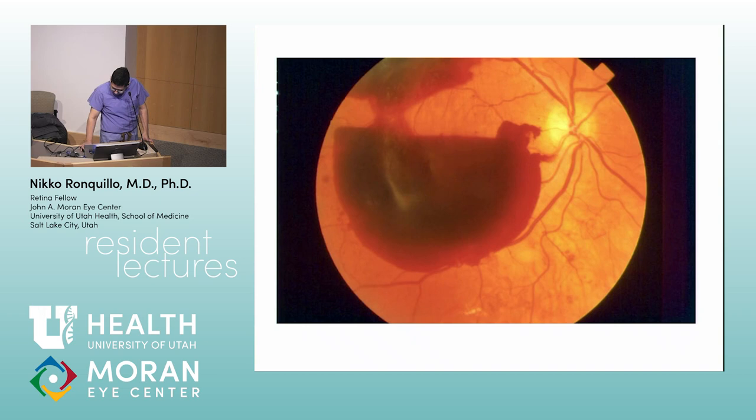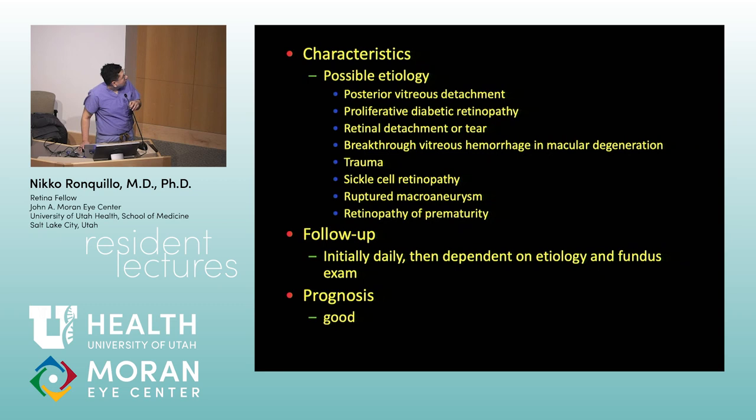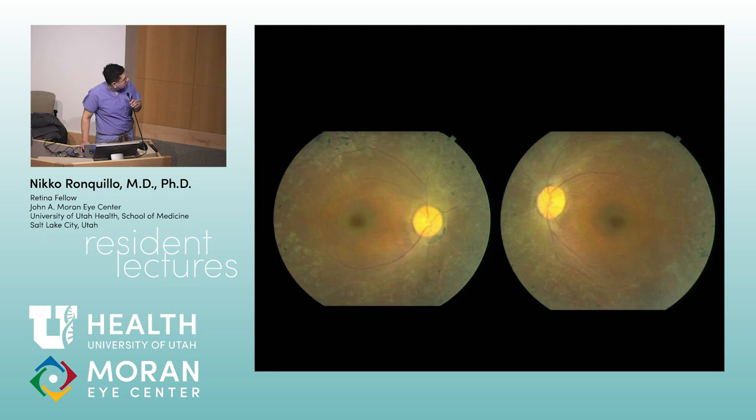Next — vitreous hemorrhage. Differential in children was covered earlier. Many of these conditions are clinically important but not heavily tested in OCAPS.